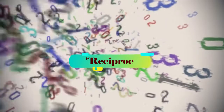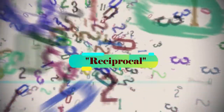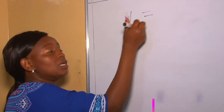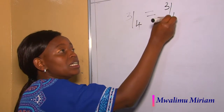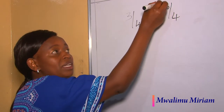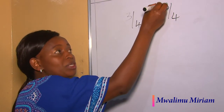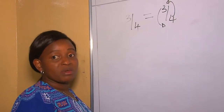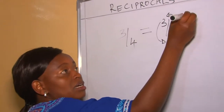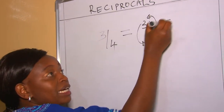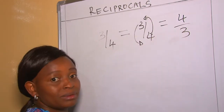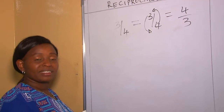Welcome to my YouTube channel. Today's lesson is about reciprocals. To get the reciprocal of three quarters, we interchange our numerator to become the denominator and our denominator to become the numerator — that is, our denominator goes up and our numerator comes down.